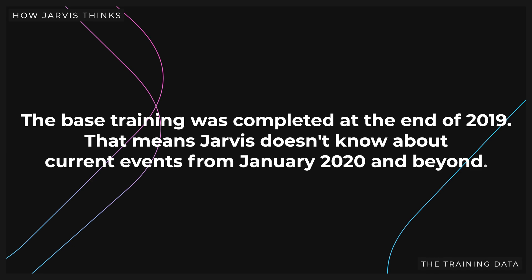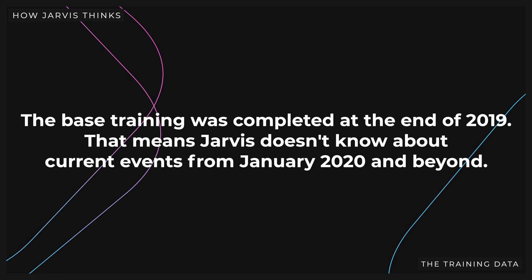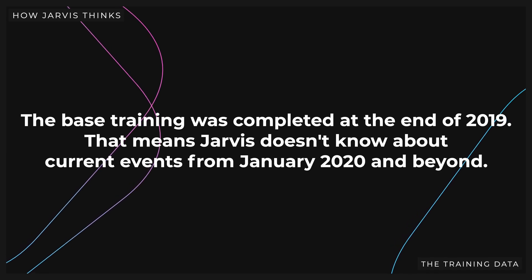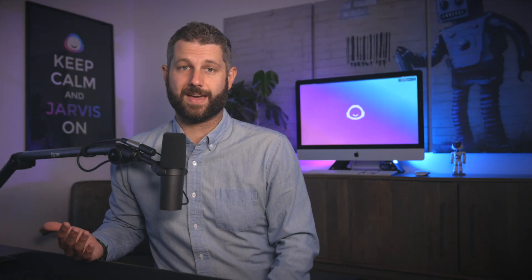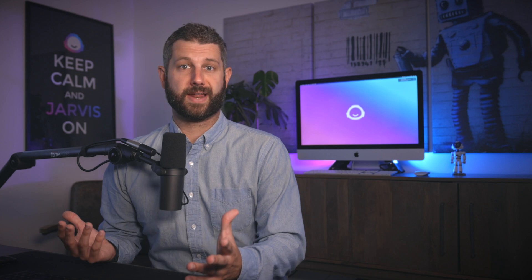The base training was completed at the end of 2019. That means Jarvis doesn't know about current events from January 2020 and beyond. For instance, Jarvis just doesn't know that COVID-19 happened yet. This is the point where some will freak out and say, well, Jarvis can't help me then — I write topics that are new since 2019.